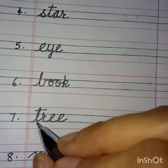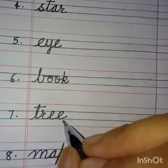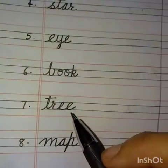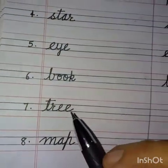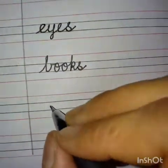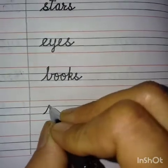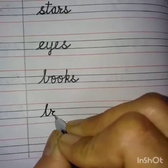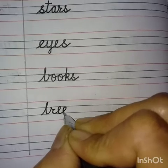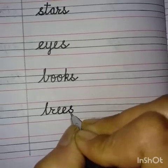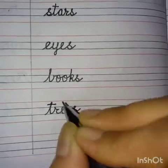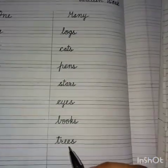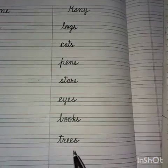Number seven: T-R-E-E — Tree. Here we have one tree. For many: T-R-E-E-S. Cross the T — Trees. Many trees.